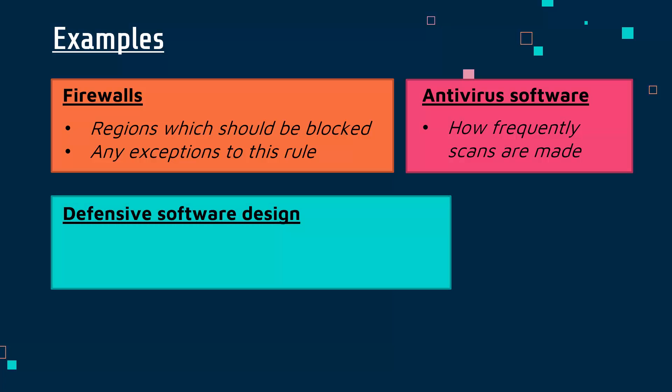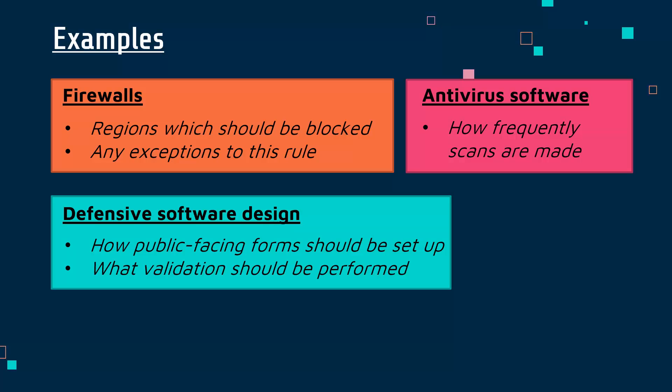If one of your hardening techniques involves good defensive software design — for example, checking inputs to websites and ensuring no user can directly interact with a database — you might set out in your policy how public-facing forms should be configured. This includes whether certain entries like passwords should be obscured with asterisks, which inputs should have autocomplete disabled, and what validation should be performed. Validation is checking inputs to make sure they are valid, sensible, and not malicious. You might validate based on length, characters used, or a range, and outline this in a policy.